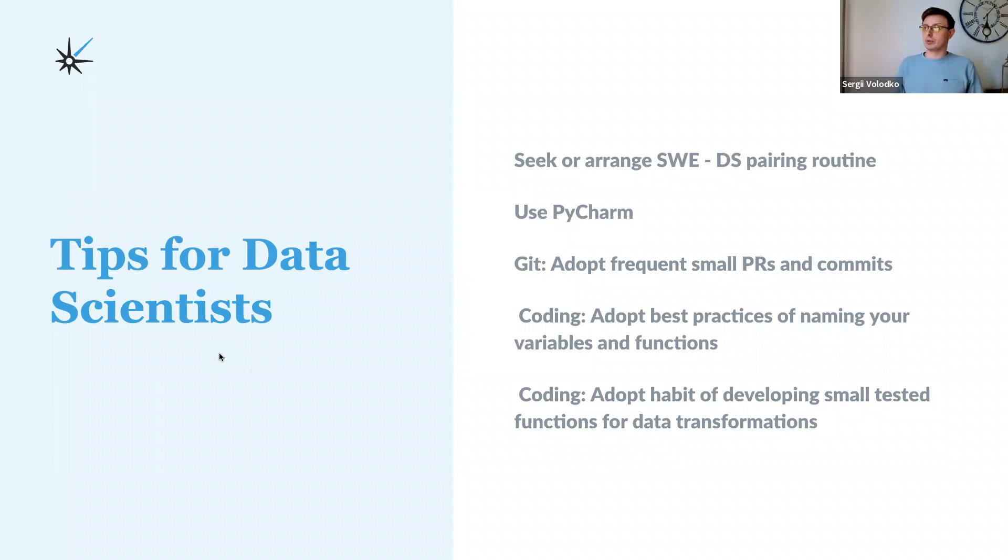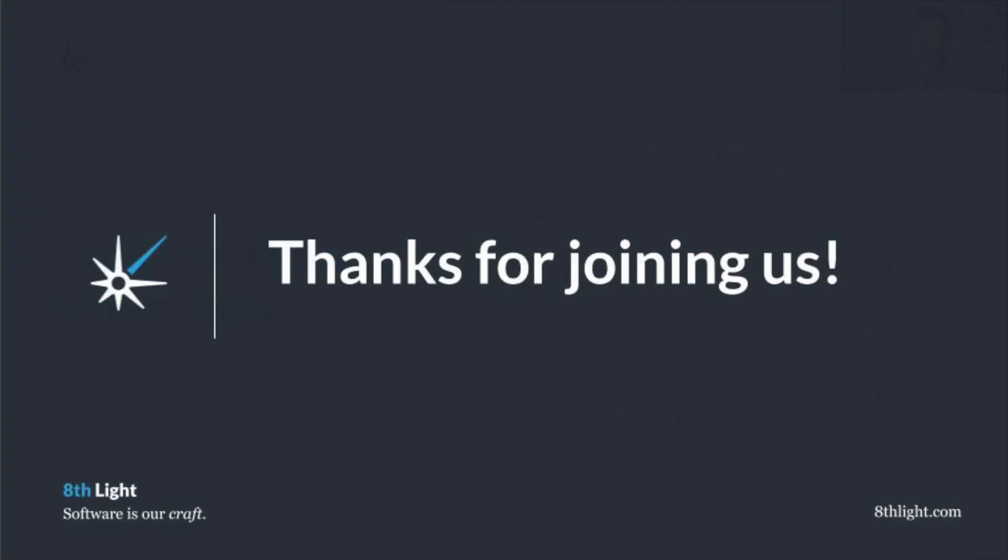Make your data scientists better coders by pairing with them, sharing clean code practices, helping to test the code, and Git crash course is also very useful. For data scientists, I would say it is very useful to have pairing between engineers and data scientists. Being proactive in seeking pairing slots and organizing it seems to be very big value. Ask them to install PyCharm on your environment. A mind shift that can be needed is going really small frequent changes. It is just way more easy to track the changes and progress with stable speed. And of course, adopt best practices in naming and testing.